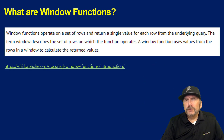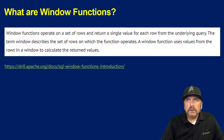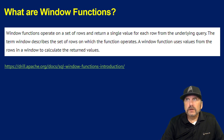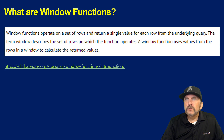What are window functions, you may be asking? Window functions operate on a set of rows and return a single value for each row from the underlying query. The term 'window' describes the set of rows in which the function operates, and a window function uses values from rows in a window to calculate the returned values.